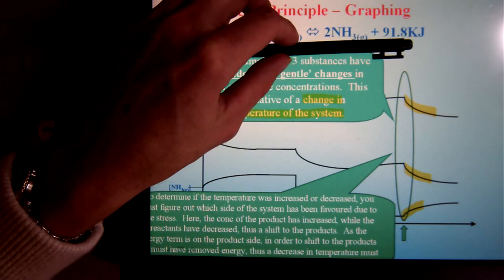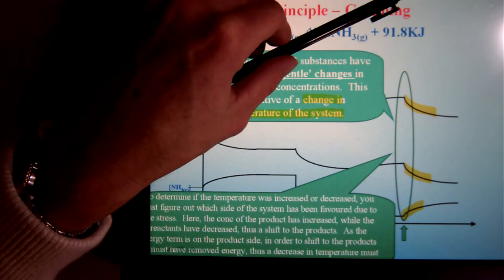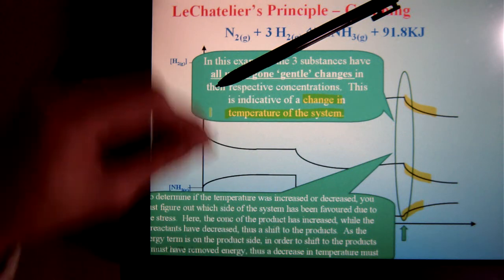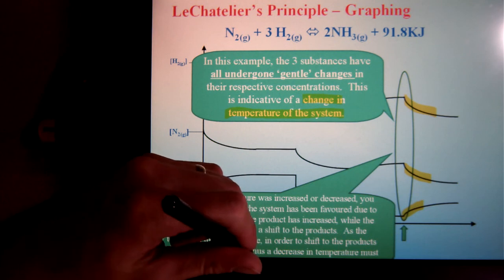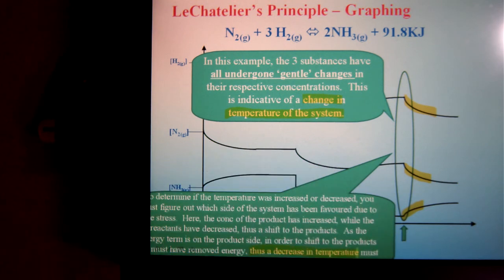So what does that mean I had to do the energy? Well, the energy is a product. Which means I must have taken away energy. Which is a decrease in temperature. A decrease in temperature of the system. That's how you analyze graphically. That's why I'm satisfied. Thank you.